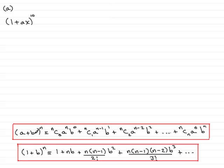So, if you have A plus B to the power N, it's the same as NC0, A to the power N times B to the power 0, plus NC1, A to the power N minus 1, B to the 1, and it goes on like that, you can see here.